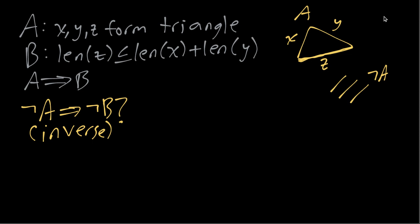But this is not correct. So in this particular example we can see if A is not true it just means we have three line segments that don't form a triangle. So they could really be any lengths. So then we don't really learn anything about B, we just have these three line segments and they could be any lengths.